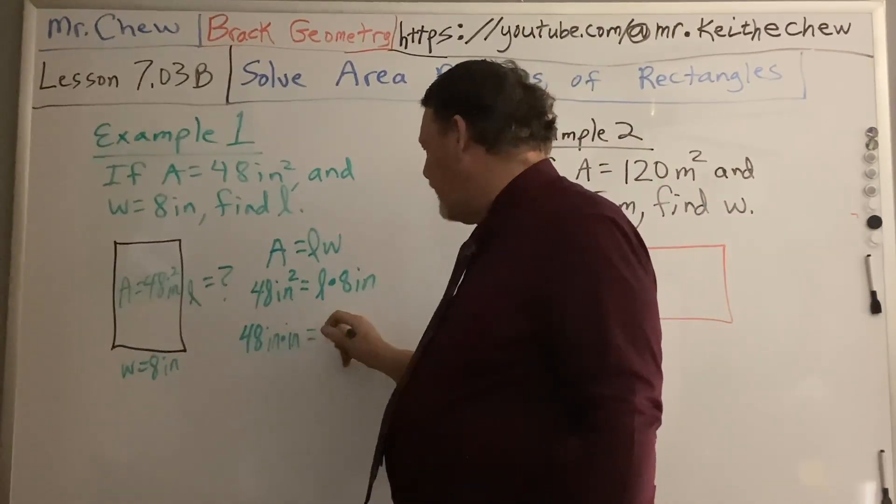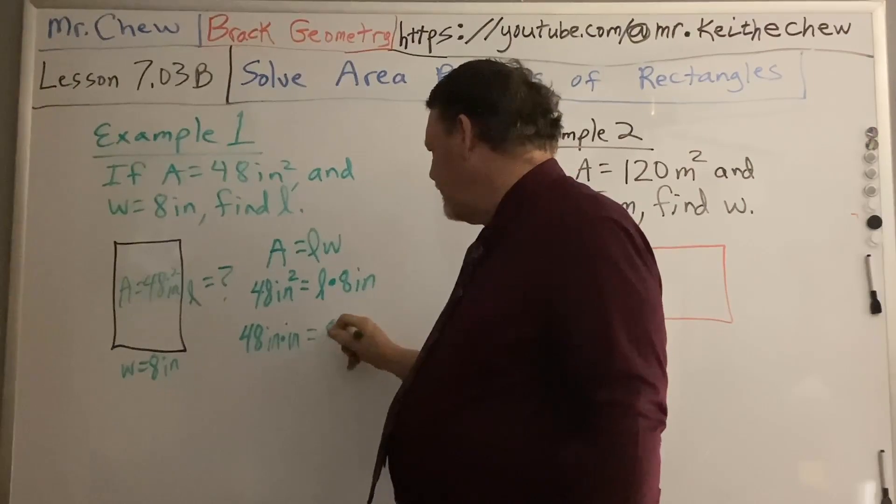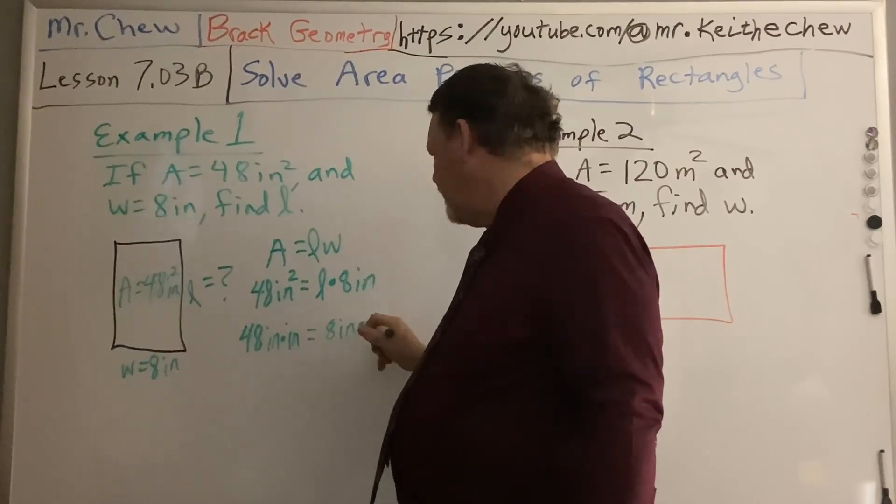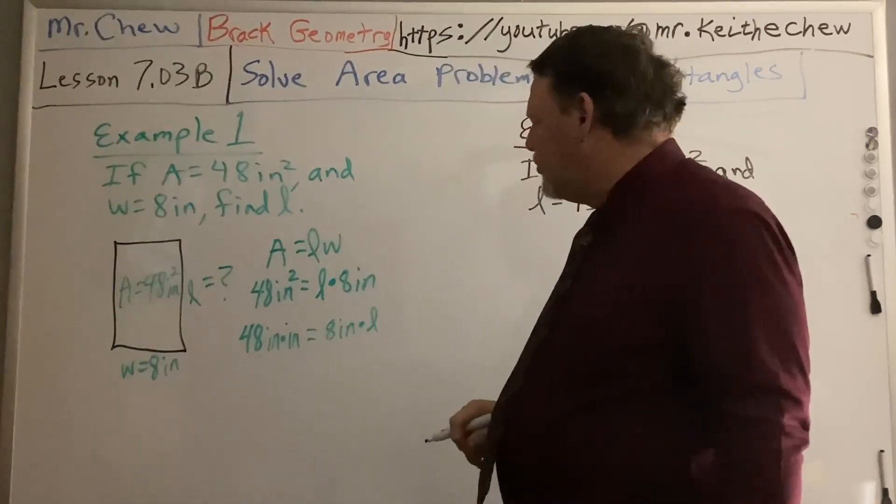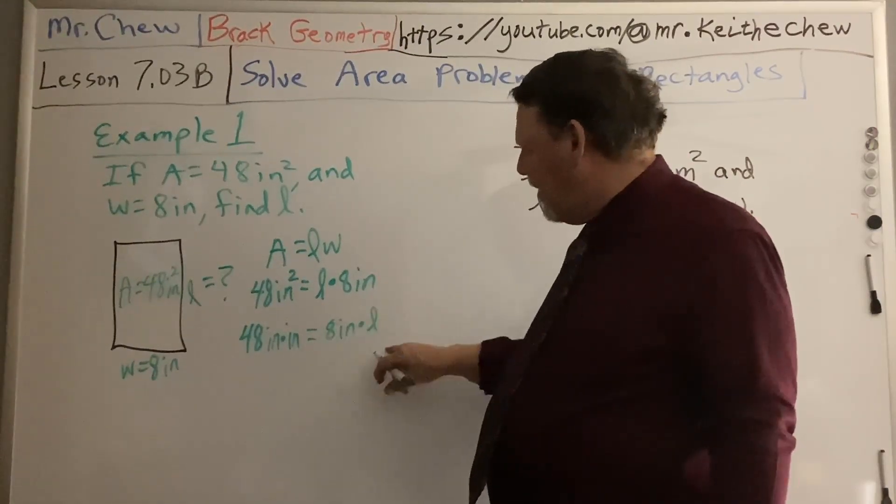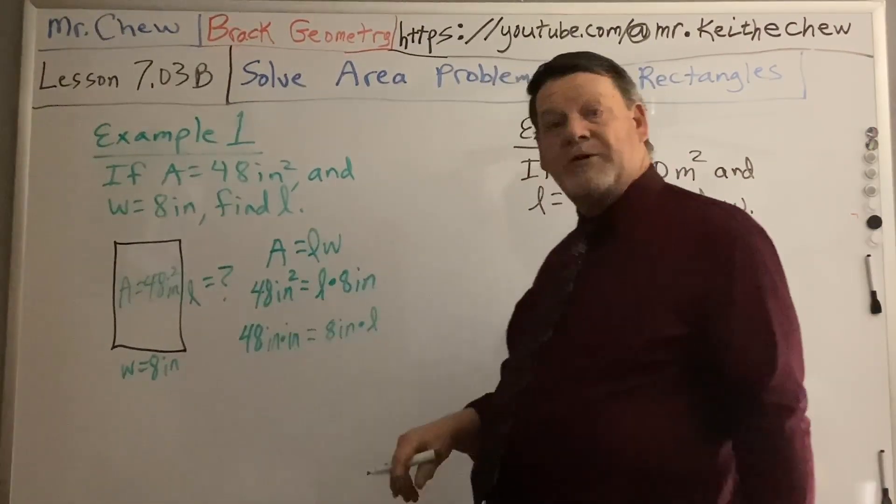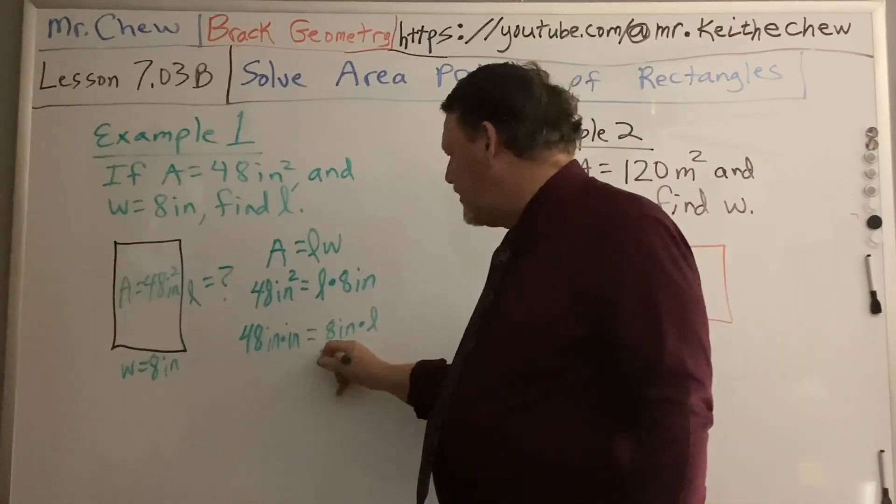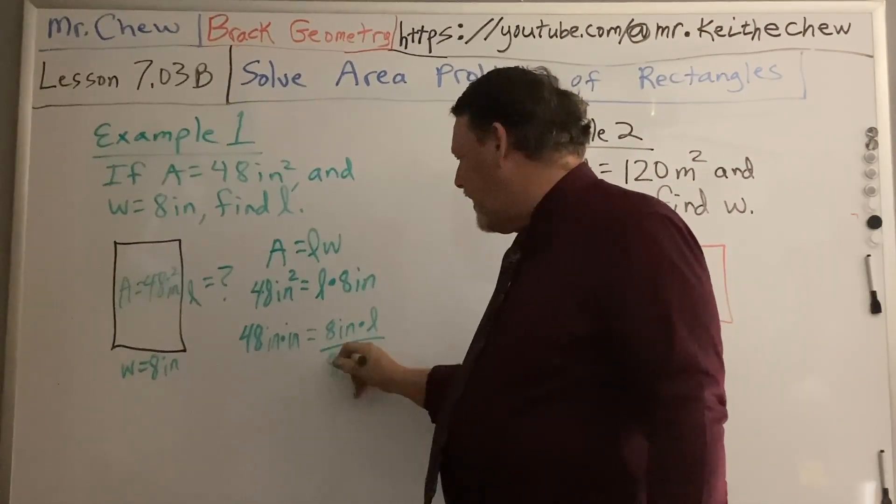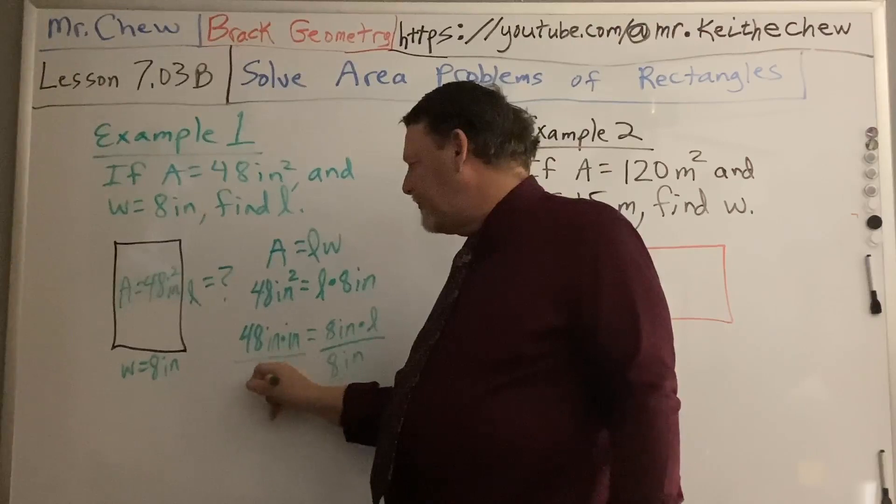I'm going to write inches squared as inches times inches so that I can divide and cancel out dimensions. You usually write the number first. So I'm going to use the division property of equality, and I need to get the L by itself, because that's what I want to see what it equals.